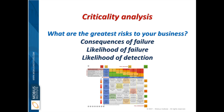Take an electric motor: the rotor bars could crack and fail, the bearings might fail, the rotor may be out of balance, or the rotor might rub against the stator. There are lots of different ways it can fail, and the consequences of failure and the likelihood of detection could be quite different. The likelihood of failing because of a bearing fault has a certain probability of occurring, while the probability of the rotor rubbing against the stator might be far less likely.